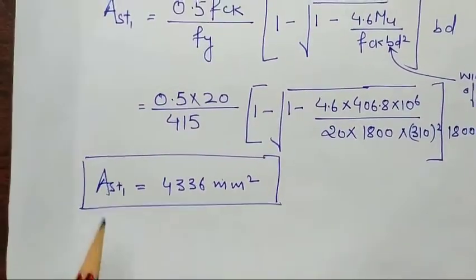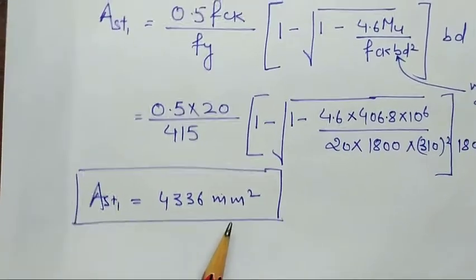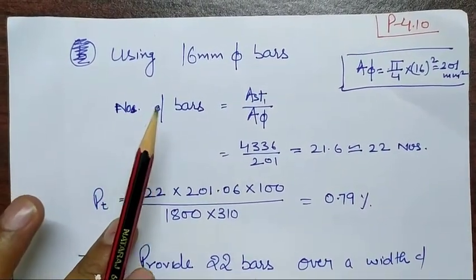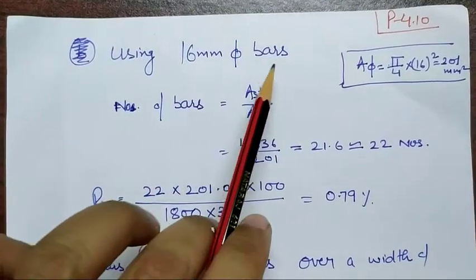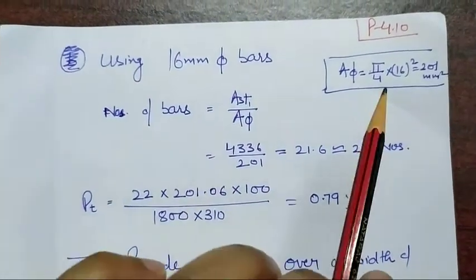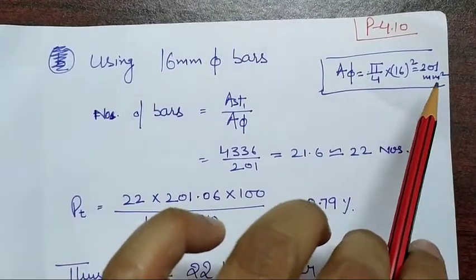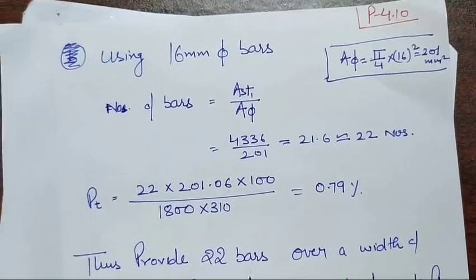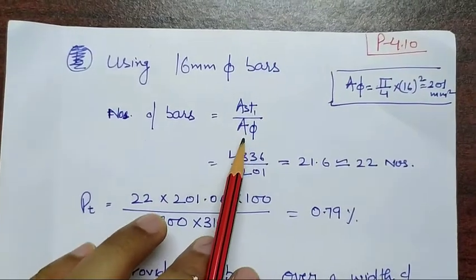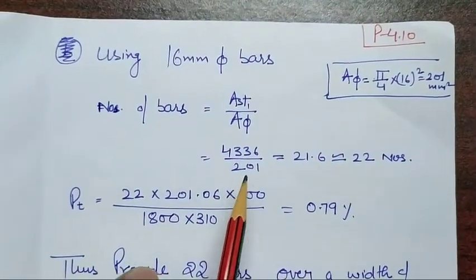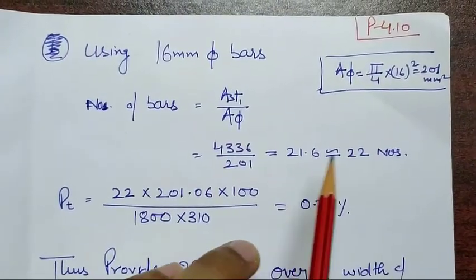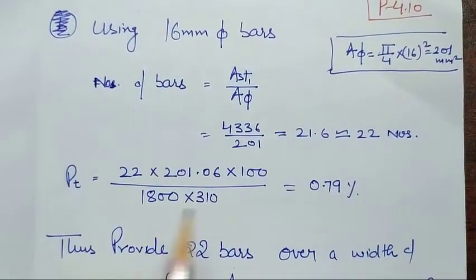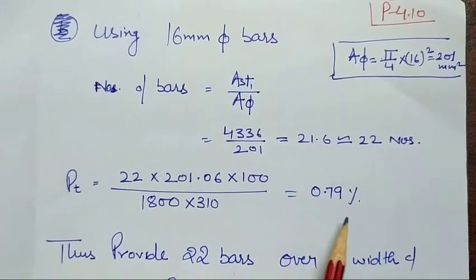The answer for Ast1 is 4336 mm². To provide this cross-section area, we are using 16 mm diameter bars, each having a cross-section area of 201 mm². The number of bars required equals total area divided by area of one bar: 4336/201 = 21.6, taken as approximately 22 bars. The percentage of steel on the basis of area provided is 0.79%.